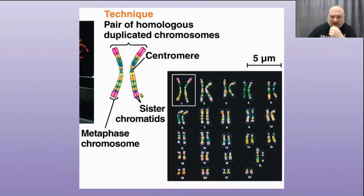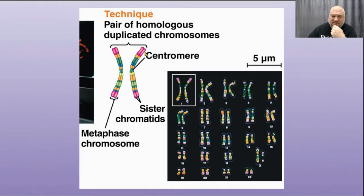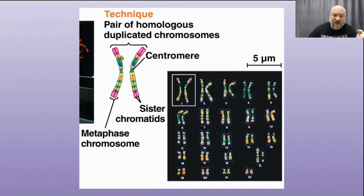Homologs of duplicated chromosomes consist of two sister chromatids each, so it looks like there are four copies of the DNA. These are homologs as well, giving four versions of the gene at this point. This is after S phase in the cell cycle, when we've synthesized or replicated new DNA.